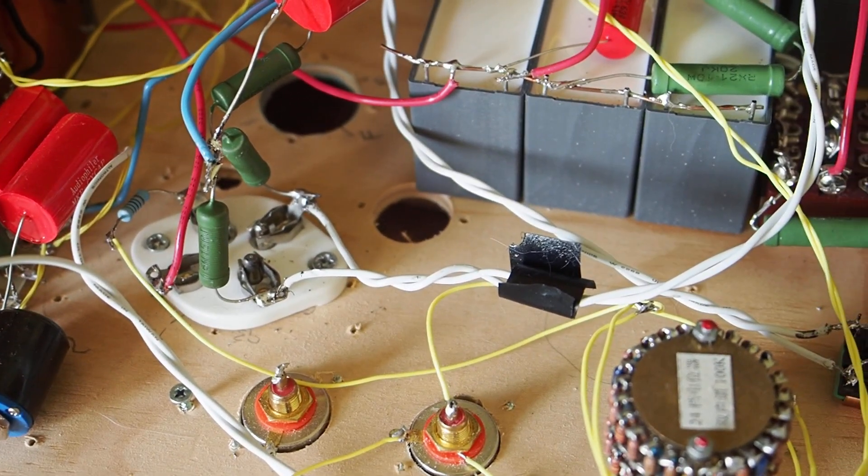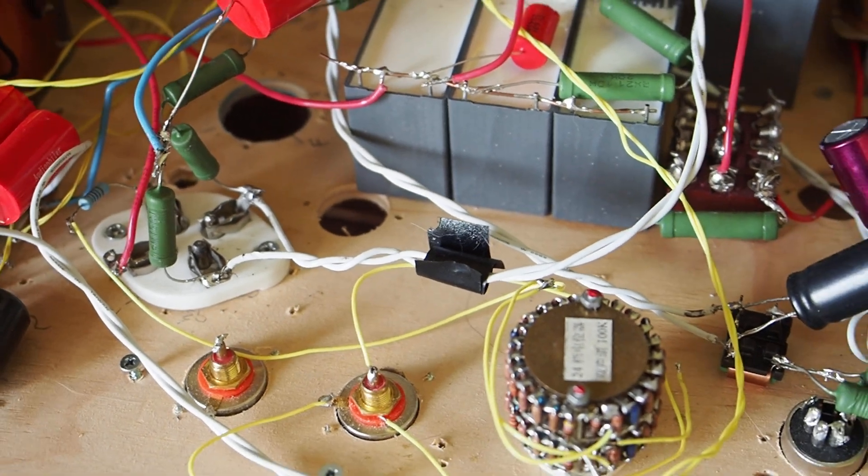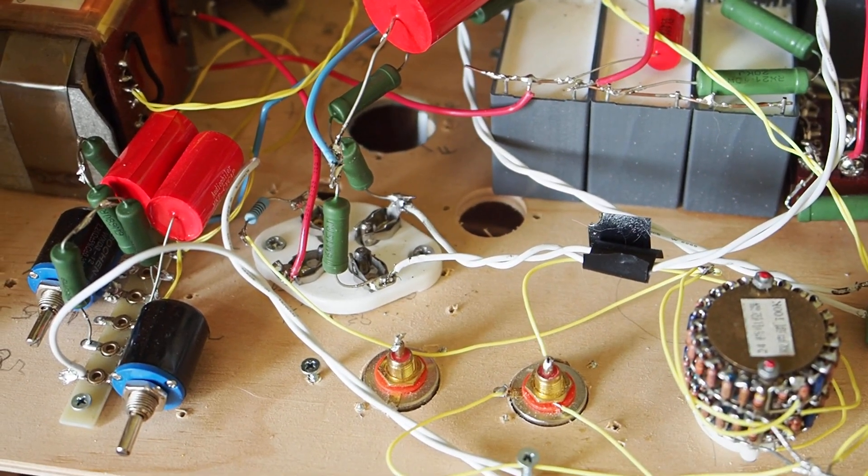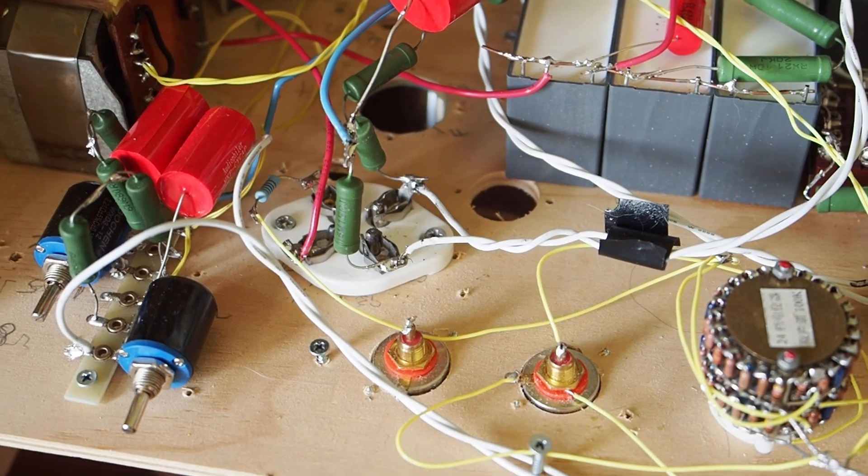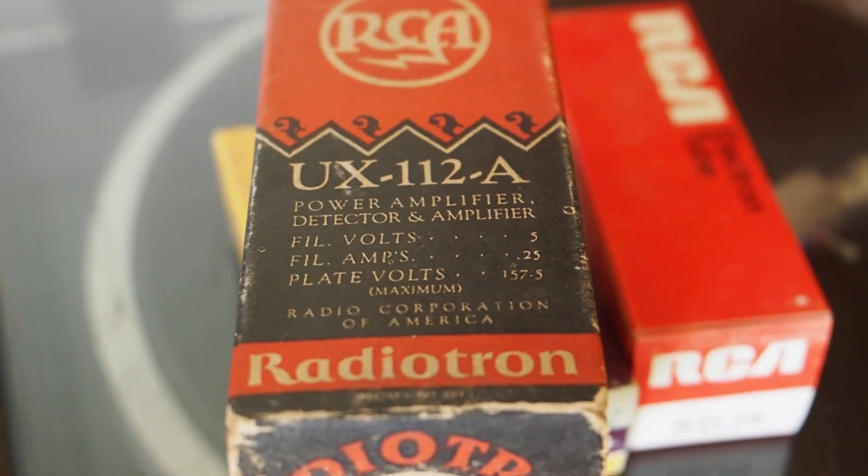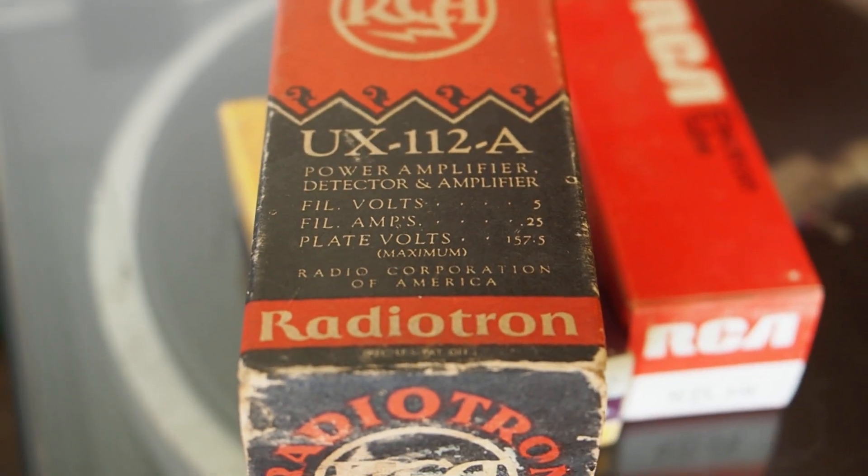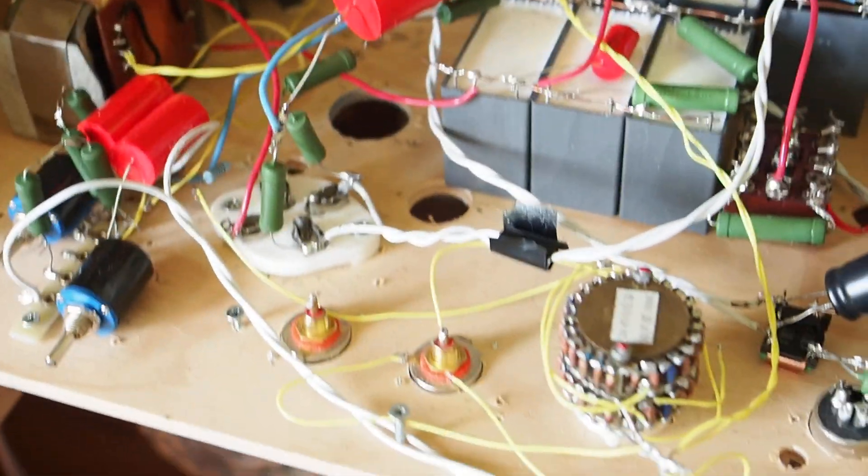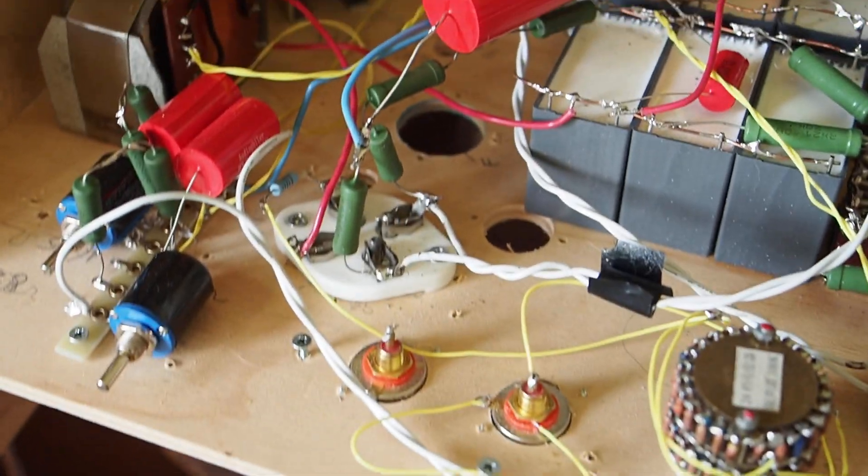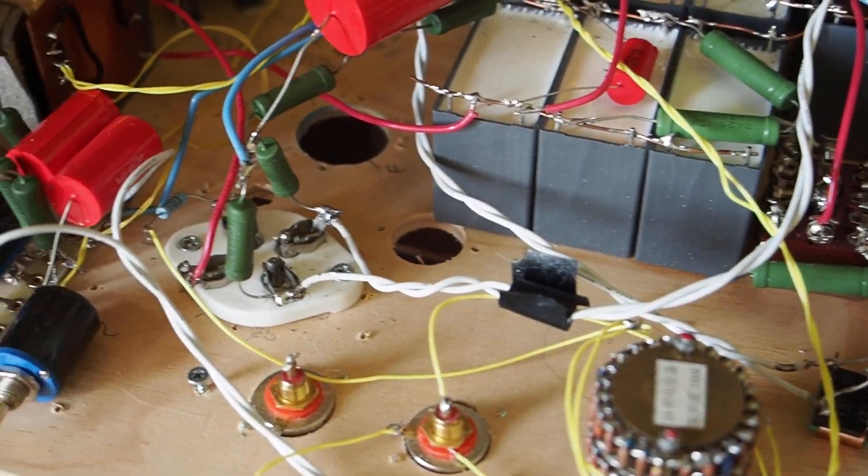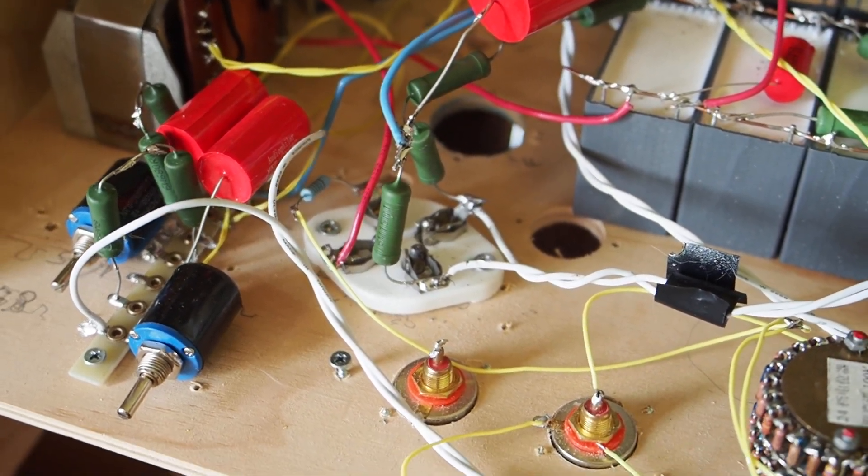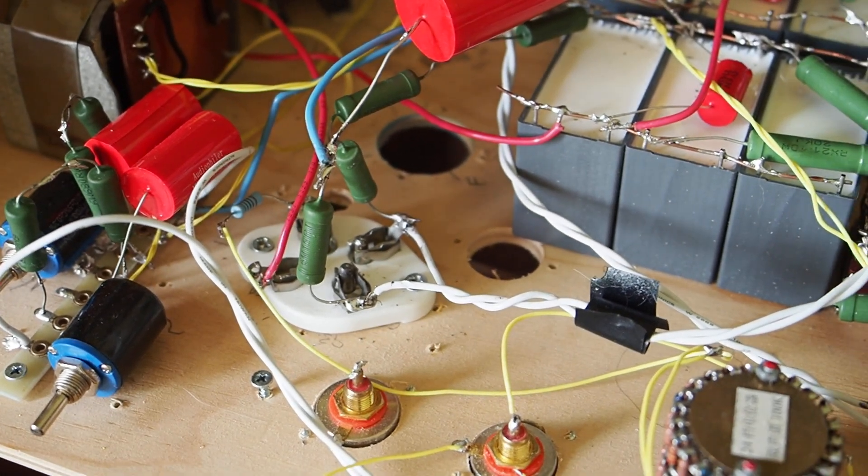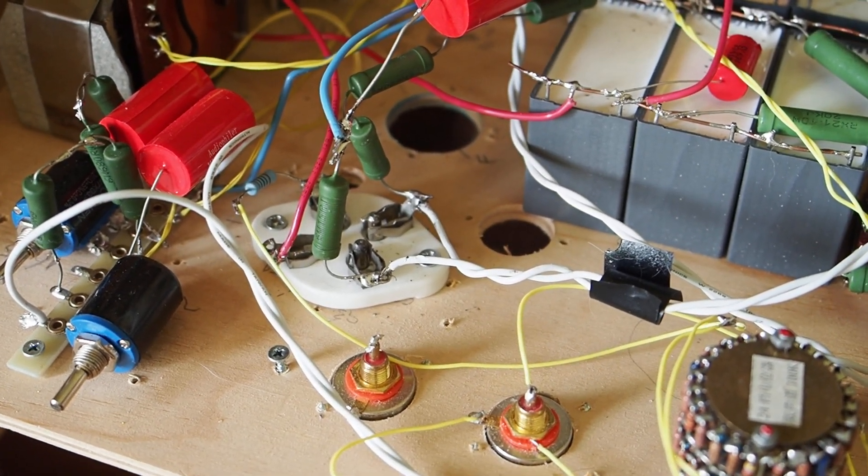The number two thing that I noticed is this tube is not as transparent as the Type 26. The Type 26 can resolve nuances in the music - it's like a very clear glass. With this, I felt it is a little bit - it's not as resolving, not as transparent. The clarity is just a little bit less.